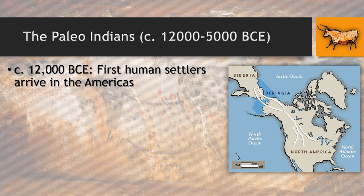We call this group the Paleo-Indians, estimated around 12,000 BCE based on fossil records and migration patterns. The first people who came to North America appear to have migrated from Siberia, which is part of modern-day Russia. Over 12,000 years ago, there was actually a land bridge between Siberia and North America, connecting Alaska to Siberia, known as Beringia.